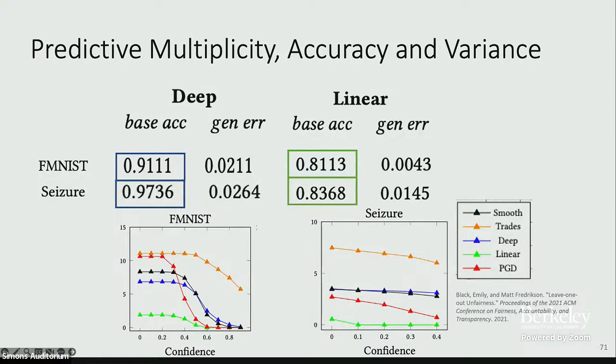This does happen in practice. In an example from a paper of mine, we have deep models on the left and linear models on the right. The accuracy increase going from linear to deep is over 10%. But looking at differences in predictions over leave-one-out changes to a model's training set — shown for linear models in orange and deep models in blue — even though the deep models are much more accurate, there are a lot more differences in prediction, meaning much more predictive multiplicity in those deep models.